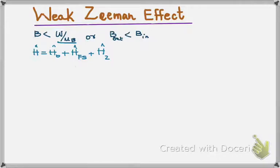It means now we have to include all these terms in the Hamiltonian. The hyperfine Hamiltonian includes the spin-orbit coupling which includes the internal magnetic field.